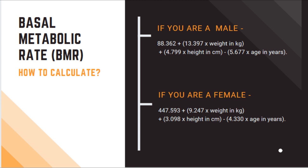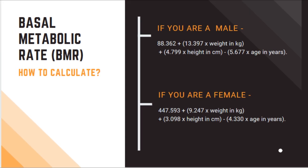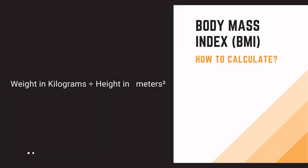Continuing the male formula: minus 5.677 multiplied by age in years. If you are a female, the formula is: 447.593 plus 9.247 multiplied by weight in kilograms, plus 3.098 multiplied by height in centimeters, minus 4.330 multiplied by age in years.